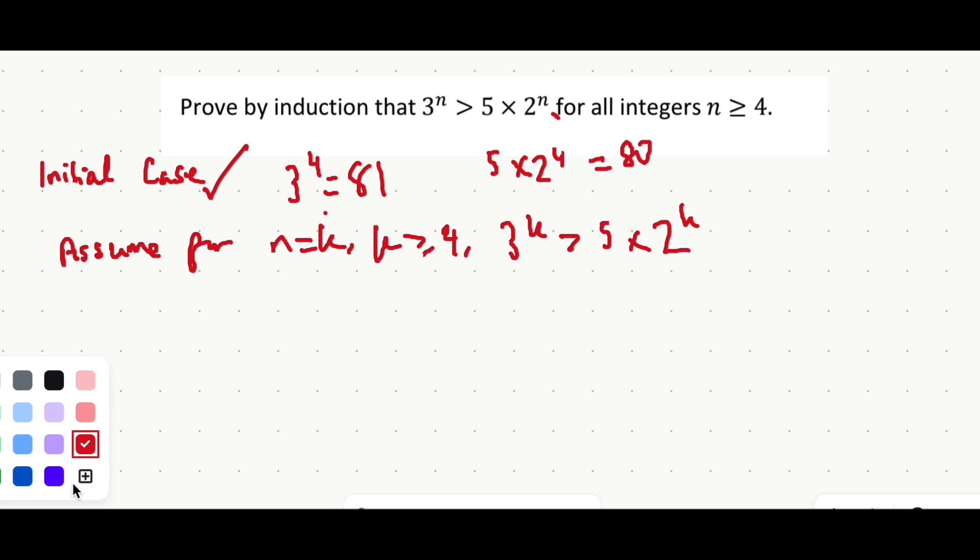After this I always advise my students to write down what you want to show. What we want to show is that when n is equal to k plus 1, that 3 to the power of k plus 1 is actually greater than 5 multiplied by 2 to the power of k plus 1. To get to this expression all I did was replace k with k plus 1.